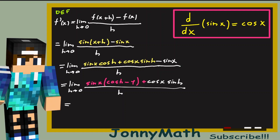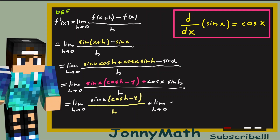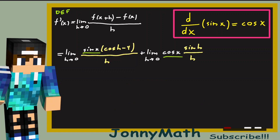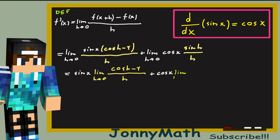We can split this into two separate limits. And since sine of x and cosine of x don't depend on h, we can bring them outside the limit. So we get sine of x times the limit as h approaches 0 of cosine of h minus 1 all divided by h, plus cosine of x times the limit as h approaches 0 of sine of h over h.